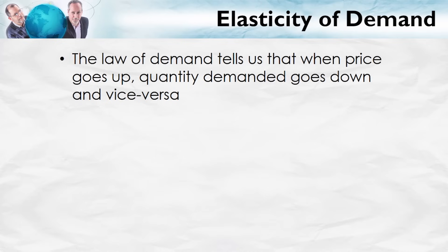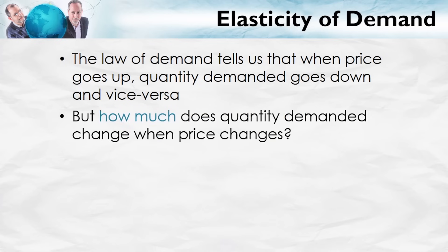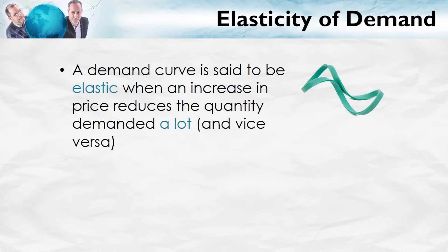Demand curves slope down. In other words, when the price goes up, the quantity demanded goes down; when the price goes down, the quantity demanded goes up. Pretty simple. But how much does quantity demanded change when the price changes? When the price goes down, does the quantity demanded increase by a lot or by a little? That's the concept that elasticity is going to help us understand.